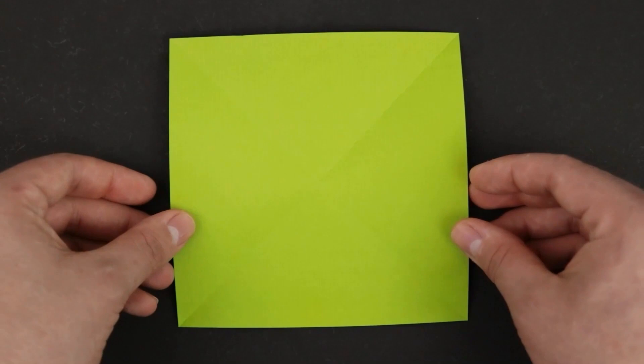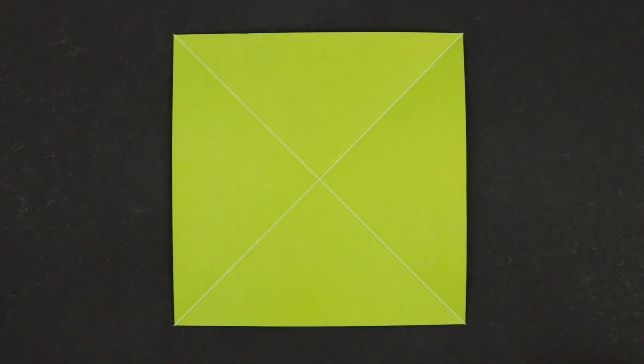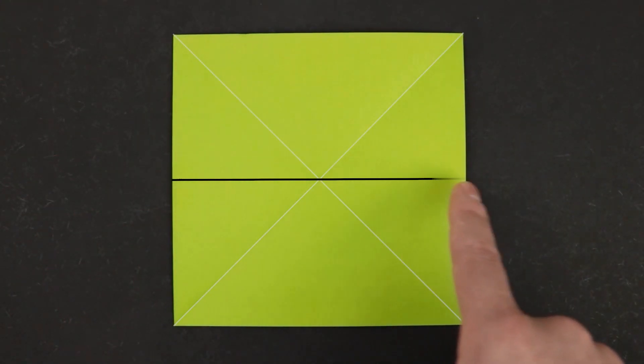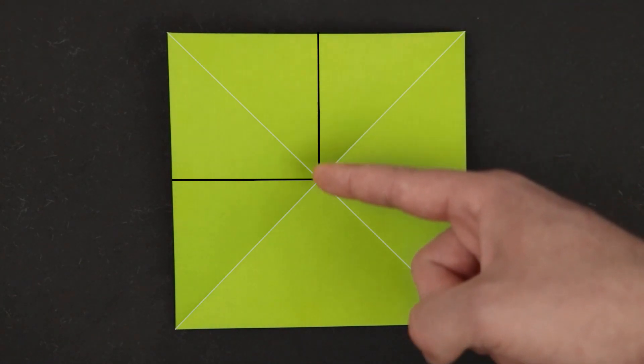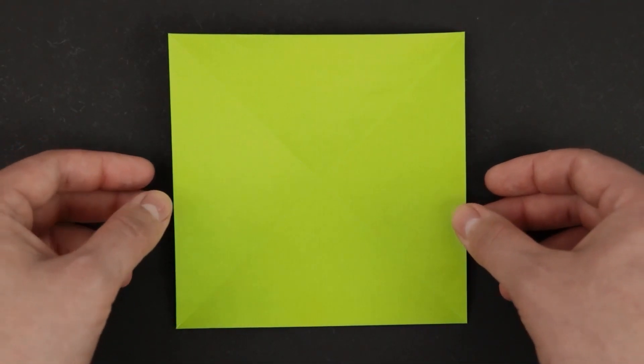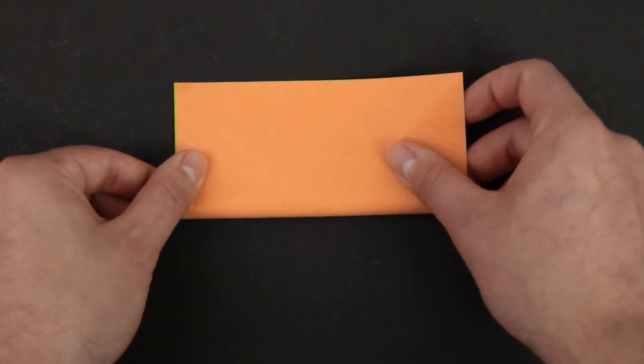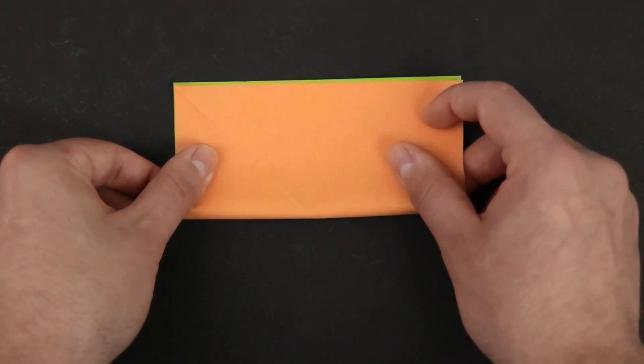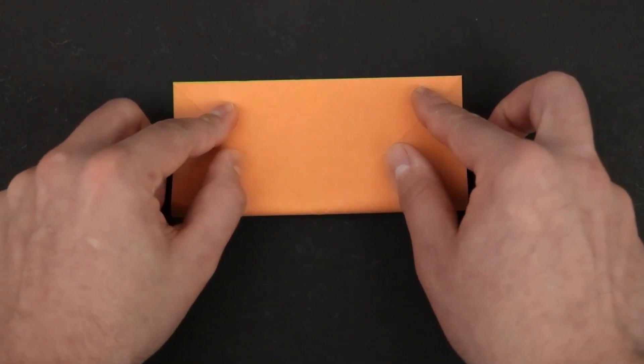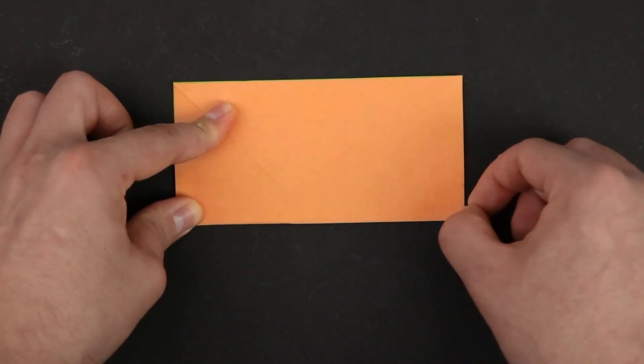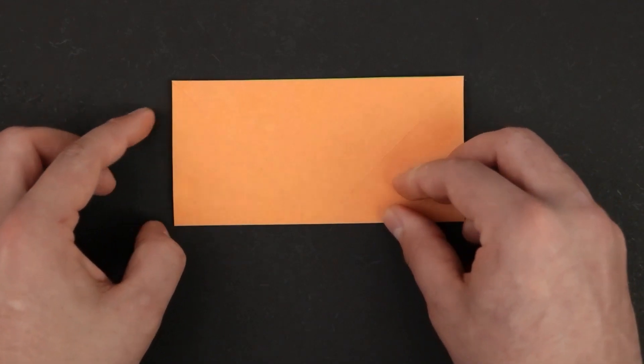Still with the green side facing up, we'll have to fold in half, horizontally and vertically. So first let's bring the bottom side to the top. And now let's fold the right side to the left. Reinforce. Unfold.